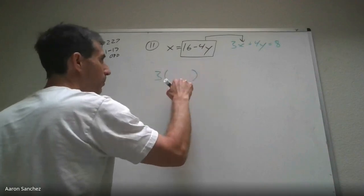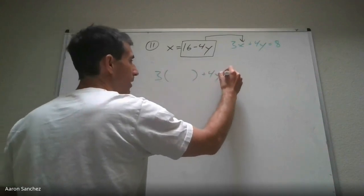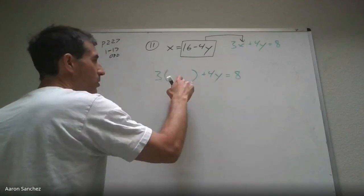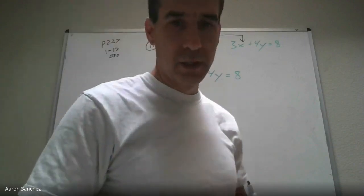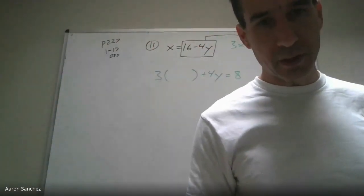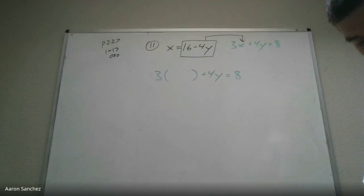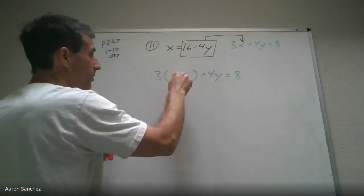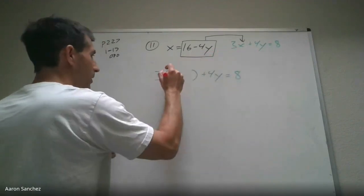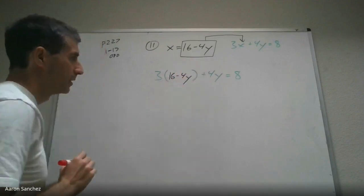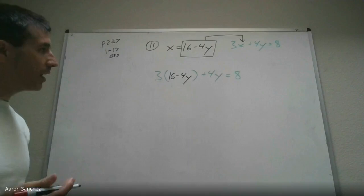David Guzman, what do I put in here? 16? Not 16 — look at this whole thing. Oh, 16 minus 4Y? Yes, because that's what's equal to X. Instead of X, I put this. Very good. So: 3 times (16 minus 4Y) plus 4Y equals 8. Now we just solve. We've done solving many, many times. If you're still having trouble, you've got to keep practicing.